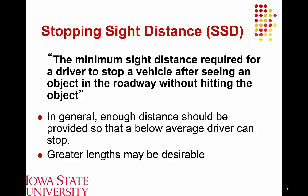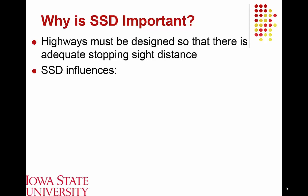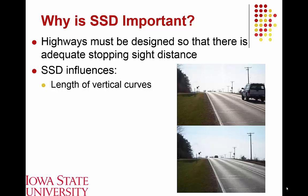When we look at stopping sight distance, the natural question is why is it important? Stopping sight distance influences several factors, including the lengths of vertical curves. For example, coming over a crest, it's difficult to see objects on the other side. You want to make sure the curve is long enough and the transition gradual enough so that you don't strike an object on the other side of the hill.